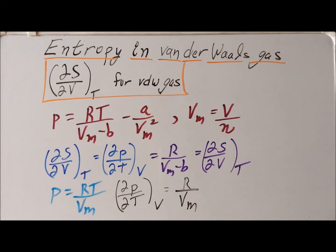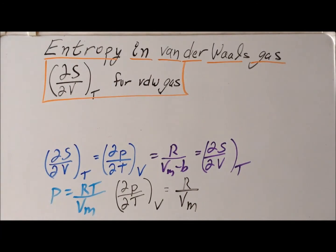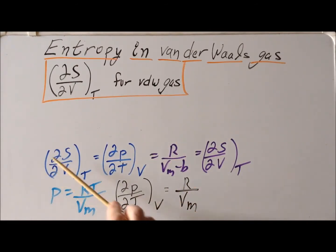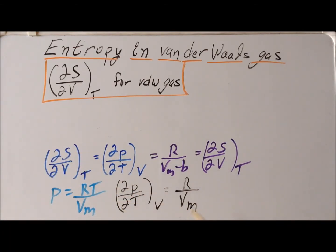So we notice that the values are slightly different. For the ideal gas it is R divided by V_M, whereas for the van der Waals gas it is R divided by (V_M minus b). This derivative tells us the rate at which entropy increases as the volume increases. For the ideal gas, that rate is R divided by V_M, whereas for the van der Waals gas it is R divided by (V_M minus b).